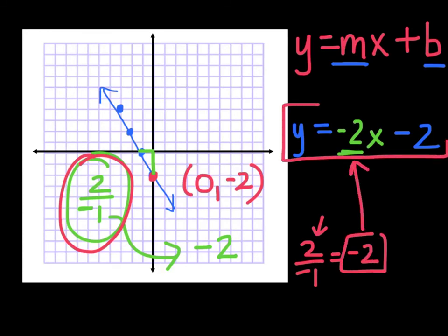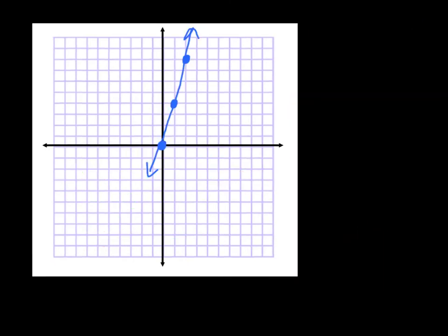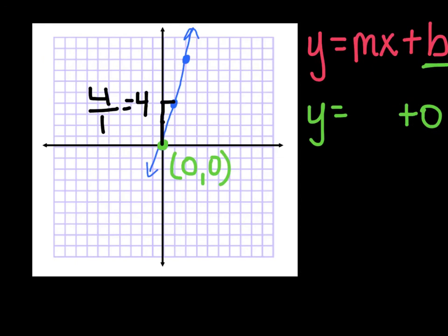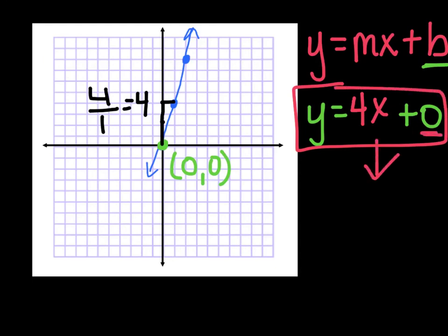Here's the last one. It's a line, so it will be in the form y equals mx plus b. First, the y-intercept looks like it's (0, 0), so at the end I'm just adding on 0. Now I find the slope — rise over run. I count up 1, 2, 3, 4 and then over 1, so my slope is 4 over 1, which is the same as 4. I can write y equals 4x plus 0, but since you don't need to write plus 0, the final equation is simply y equals 4x.